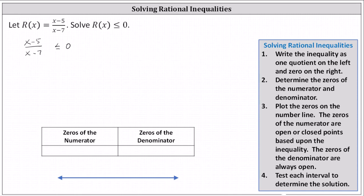To determine the zero of the numerator, we set x minus 5 equal to 0 and solve for x, which gives us x equals 5. To find the zero of the denominator, we set x minus 7 equal to 0 and solve for x, which gives us x equals 7.